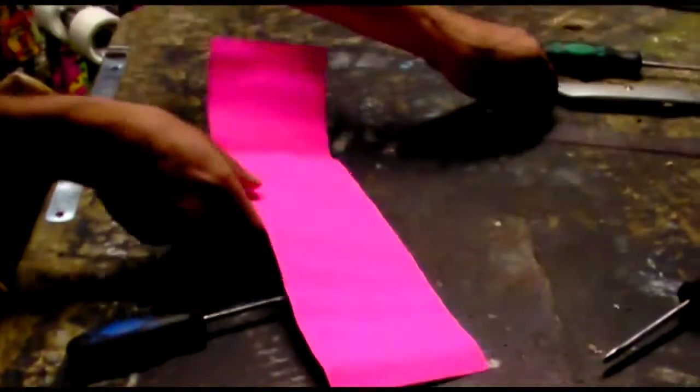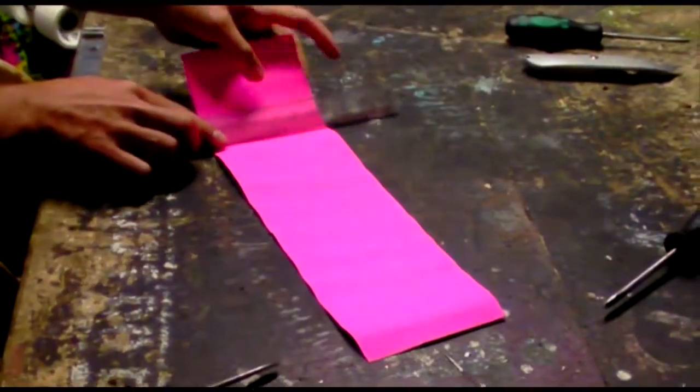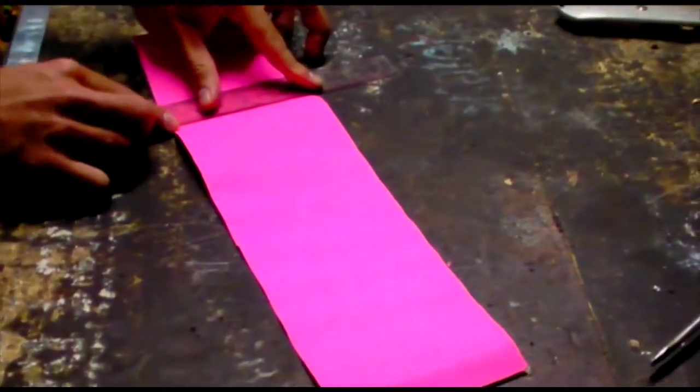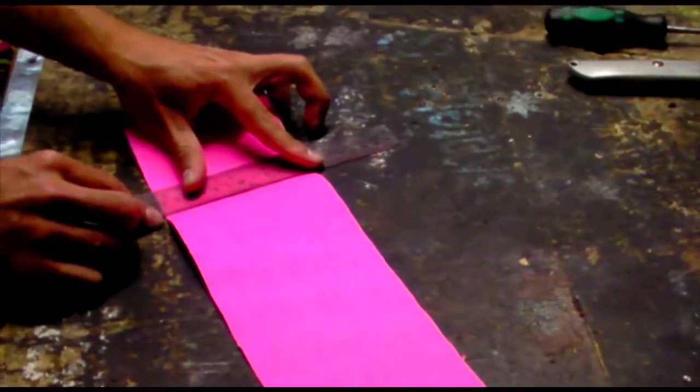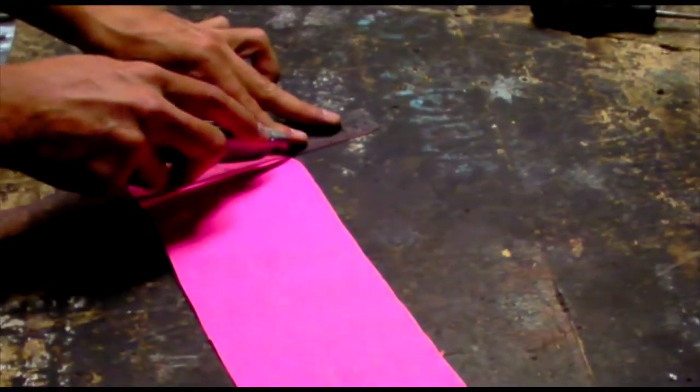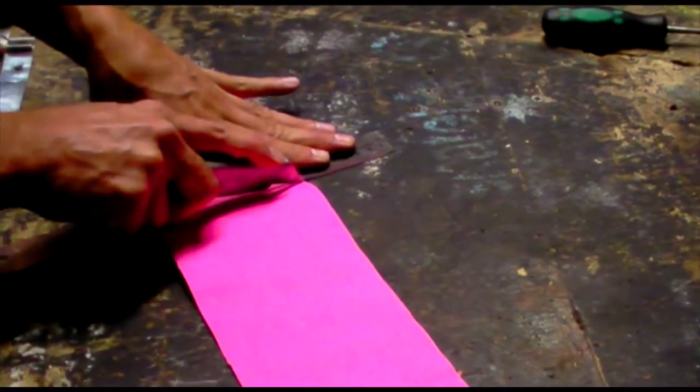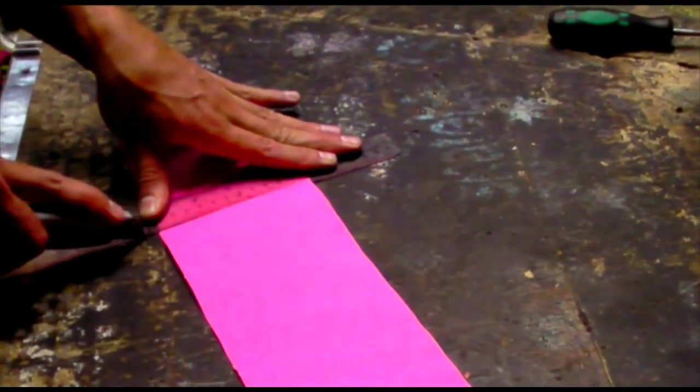Come over, you get your ruler, measure it up nice and straight, get your Stanley knife, being real careful, just cut along the ruler, right along that crease mark.